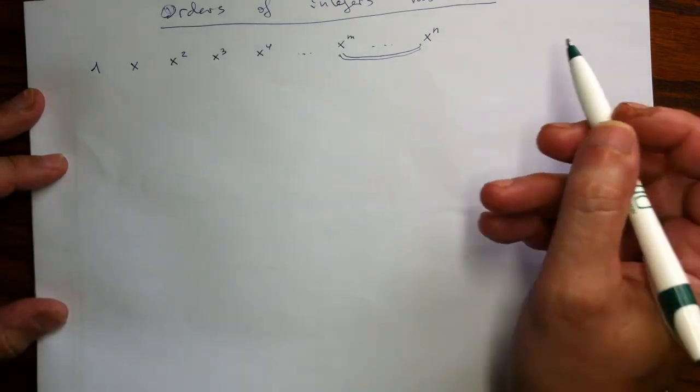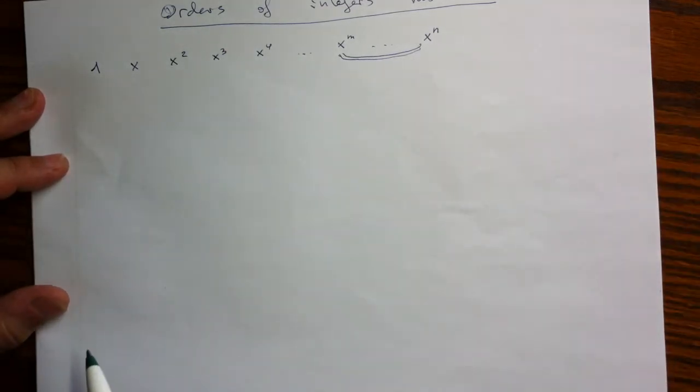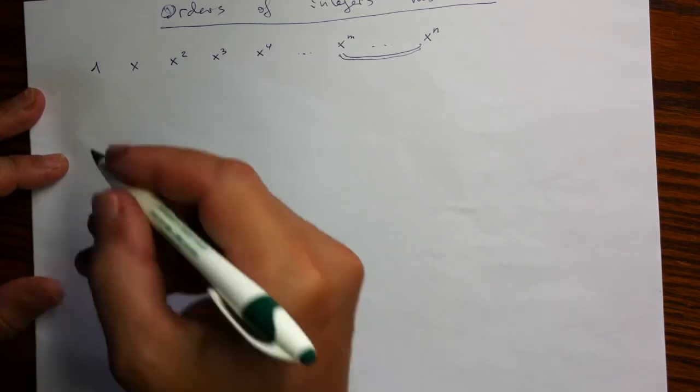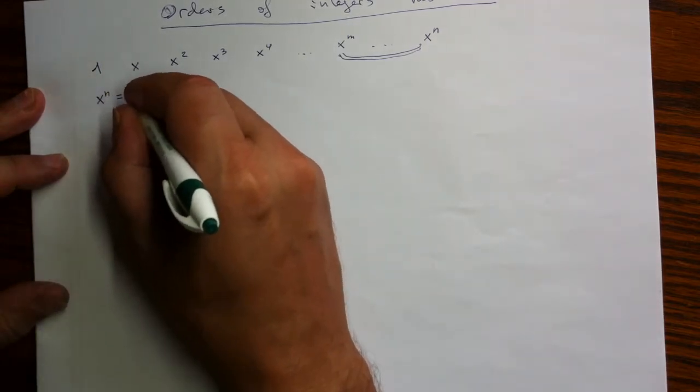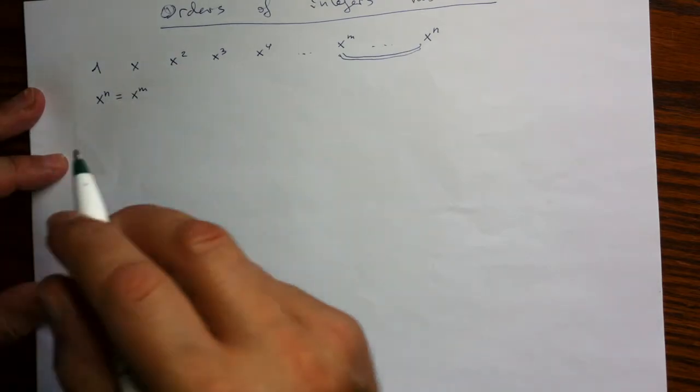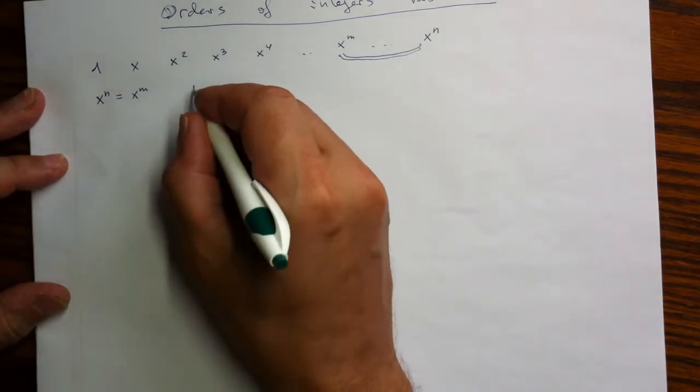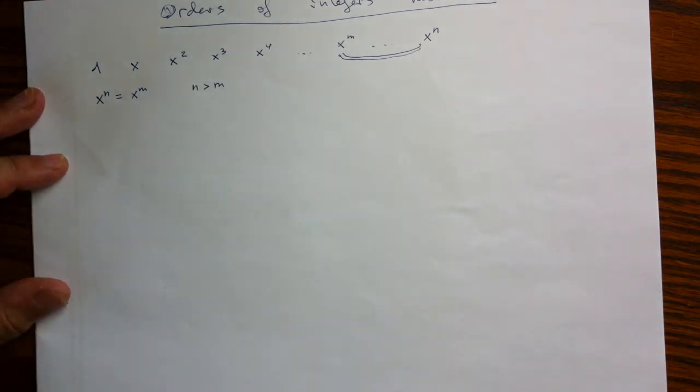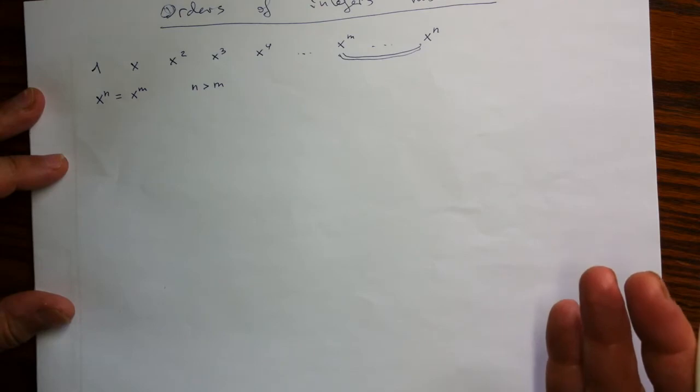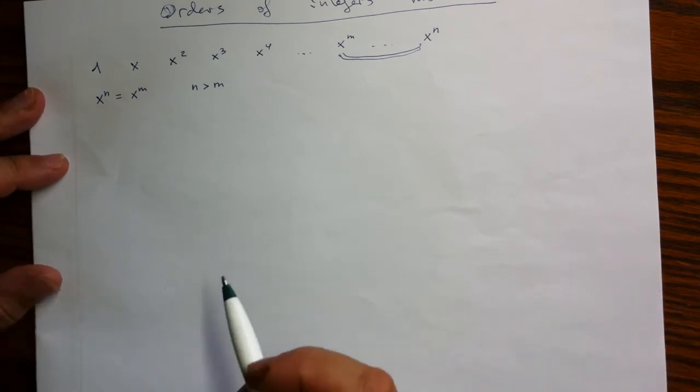It is inevitable if the number of different answers is finite. So we have an equation x to the n is equal to x to the m. And we can assume that the first power is larger than the second.